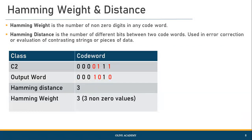Let us take another example where we have c2 and the output word. Since there are three non-zero values in c2, we define the hamming weight to be three. The hamming distance is given in red color because there are three different pairs of values between c2 and the output word, so the hamming distance is three.